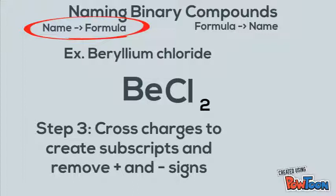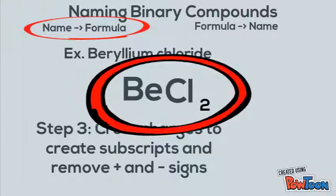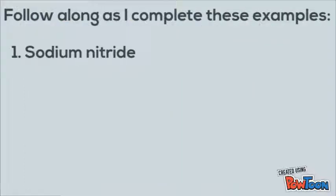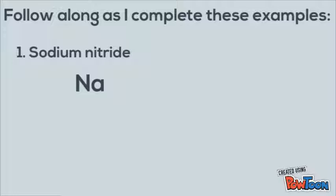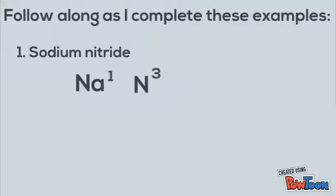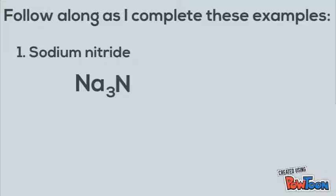Beryllium chloride is BeCl₂. For sodium nitride: sodium is Na and nitrogen is N. Sodium is plus one, nitrogen is minus three. Remove the signs and slide the charges down. We don't need the one, so get rid of it. The answer is Na₃N.